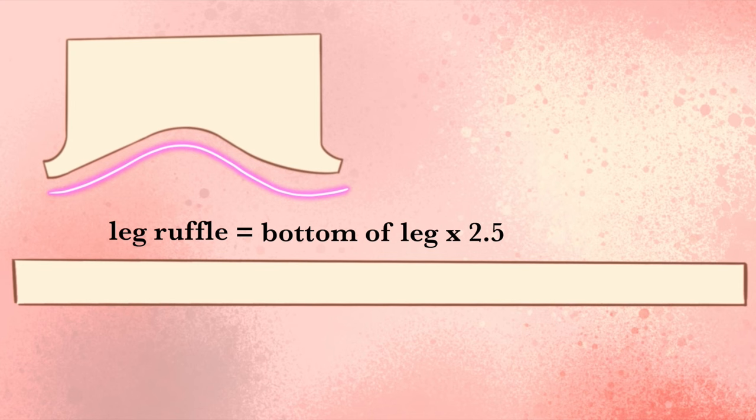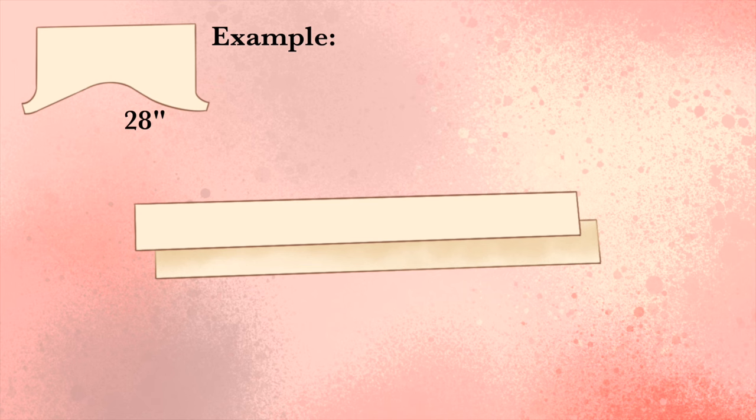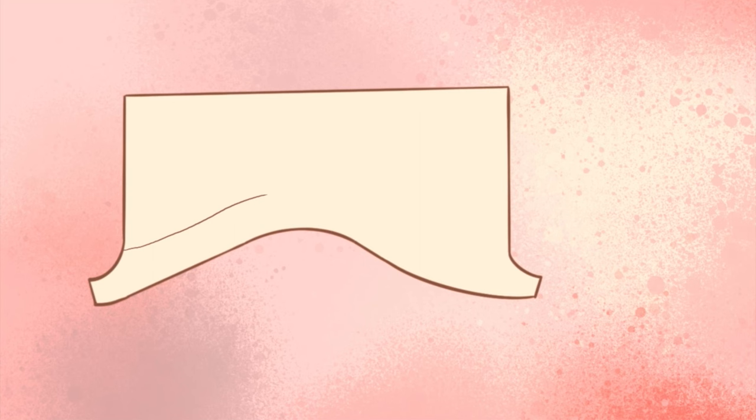To find your leg ruffle, measure the bottom of the leg and multiply that by 2.5. This will be how much you need for each leg opening. So for example, if your leg opening is 28 inches, you'll need about 70 inches for each leg.